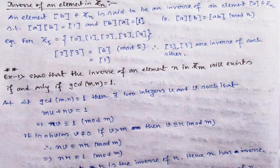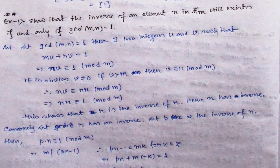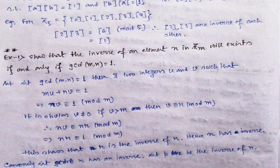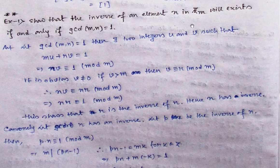Based on this, there is a theorem that has appeared twice in exams: show that the inverse of an element n in Z_m will exist if and only if gcd(m, n) = 1. So only when the gcd of n and m is 1 can we say the inverse exists. In our example, gcd(2, 3) = 1, so 2 has an inverse and 3 has an inverse.